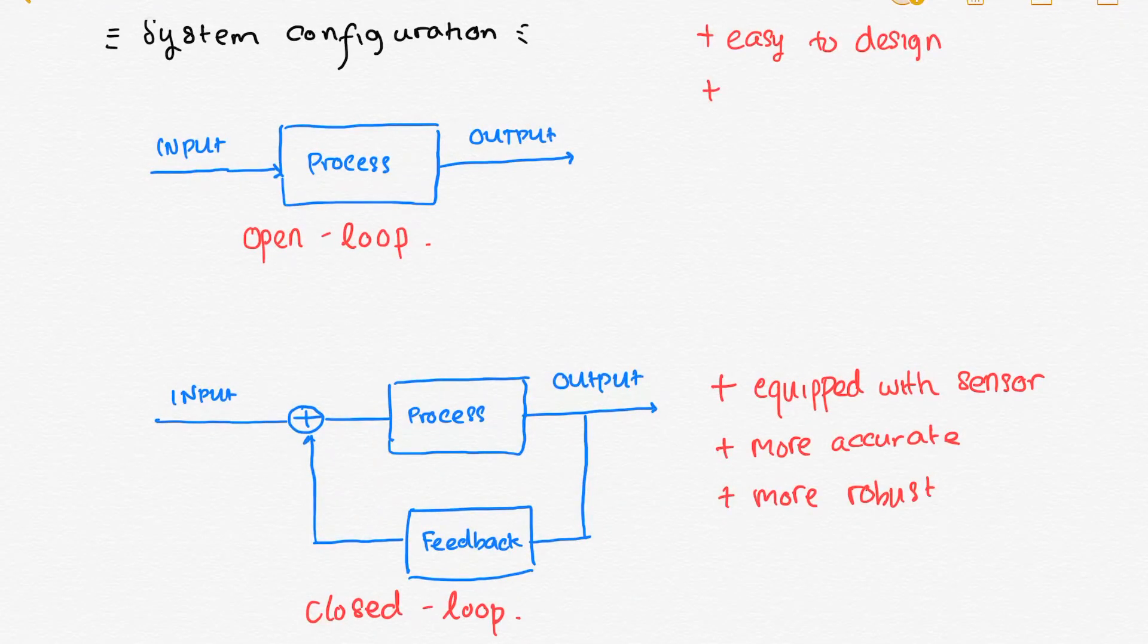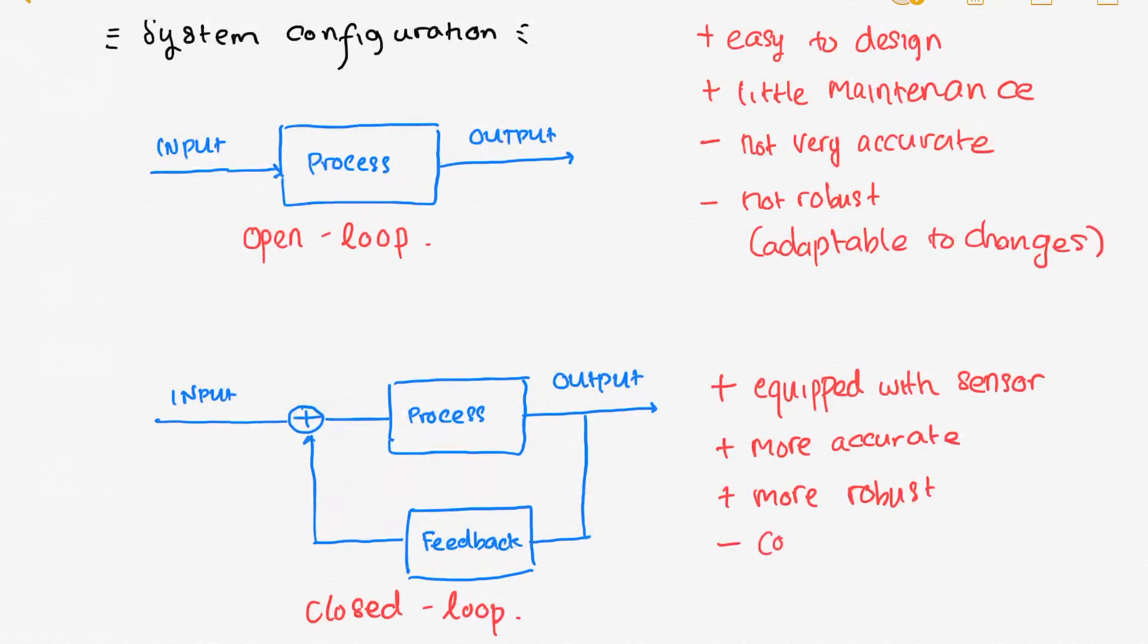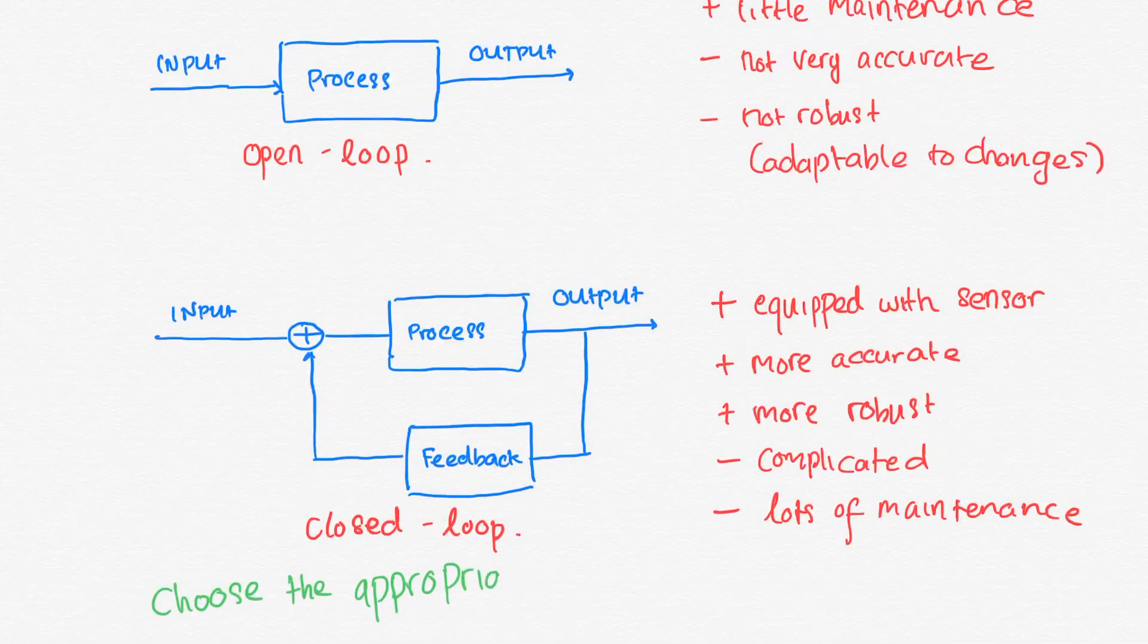For open loop system, it is the other way around. It is simple in terms of design, construction, and maintenance, but it's not as accurate as closed loop system and is pretty much unreliable in more complex situations. However, choosing between the two appropriate control systems is essential in your career as a control system engineer.